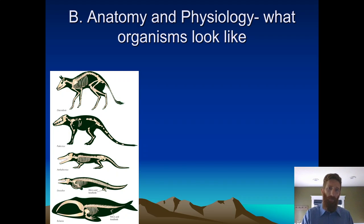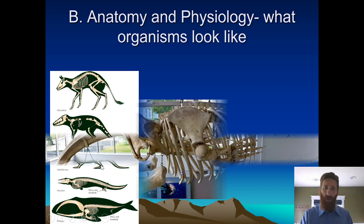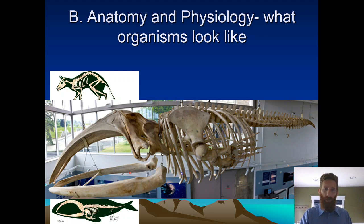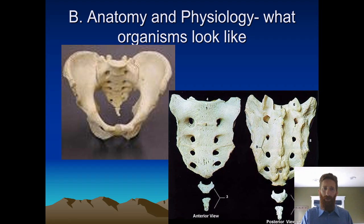We have a pretty good fossil record of transitional forms of this mammal-to-whale transition. These are all actual skeletons that they actually found. I was curious, so I looked up an actual picture of an actual whale skeleton at some aquarium, and sure enough, there they are — little hip bones just kind of sitting there in the blubber, not attached to anything else. Just kind of there.